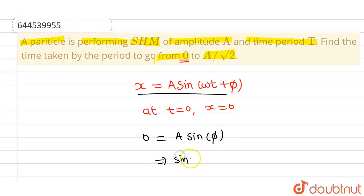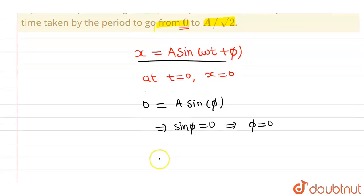From here, I will be getting sin phi equals 0, and whenever sin phi is 0, the value of phi must be 0. So the equation comes out to be x equals A sin omega t.